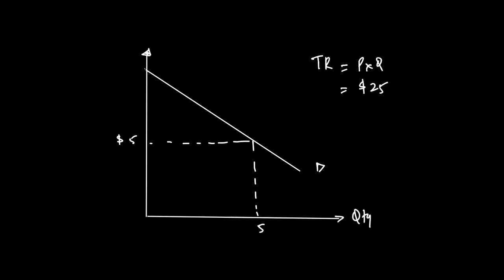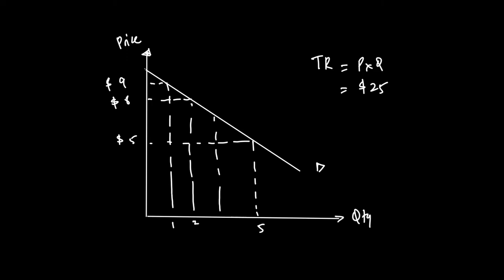Now, if the producer practices first degree price discrimination, the first consumer is charged $9, the second consumer $8, the third consumer $7, and the fourth consumer $6. Each of these prices lies on the demand curve, meaning these are the prices each consumer was willing to pay.